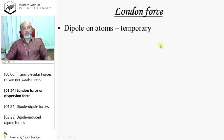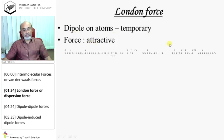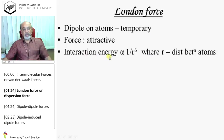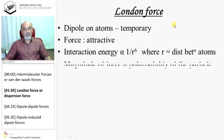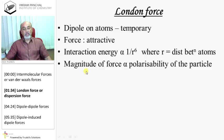So, London force creates dipoles on atoms which are temporary. The force is attractive. Interaction energy is directly proportional to 1 upon R raised to 6, where R is the distance between two atoms or molecules. The magnitude of force is directly proportional to the polarizability of the particle.